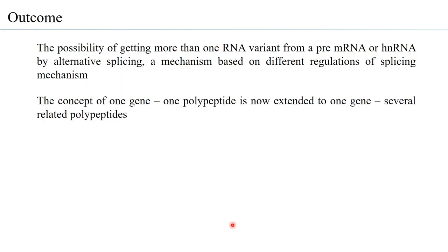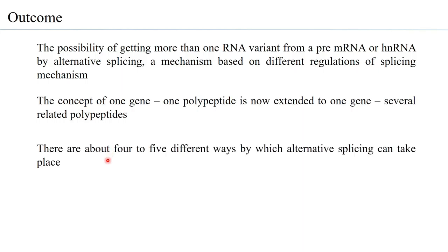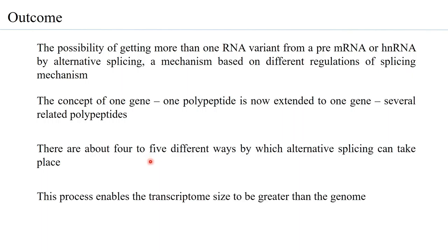The concept of one gene one polypeptide is now extended to one gene several related polypeptides. There are about four to five different ways by which alternative splicing can take place, and this process enables the transcriptome size to be greater than the genome.